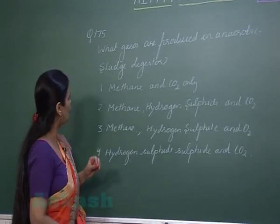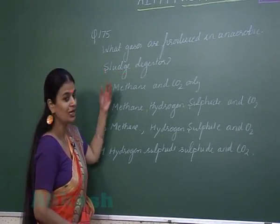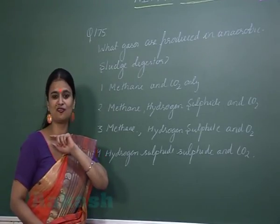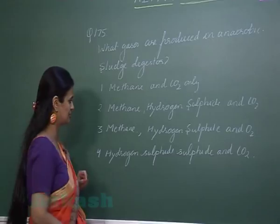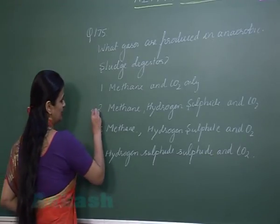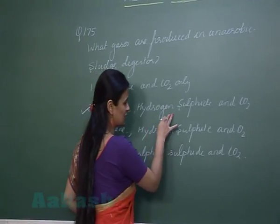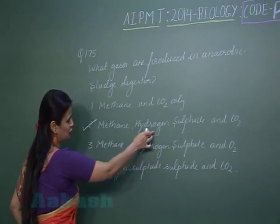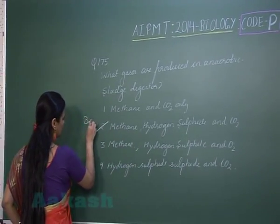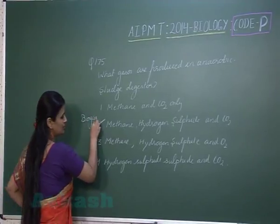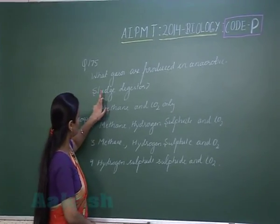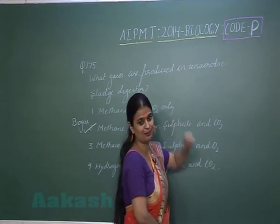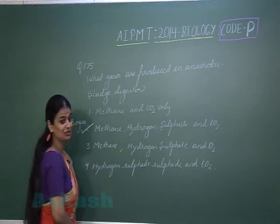Methanogens cause breakdown of sludge and result in the formation of biogas. Biogas is a mixture of gases: methane, hydrogen sulphide, and carbon dioxide. These are the mixture of gases present in biogas produced by the digestion of sludge by anaerobic microbes.